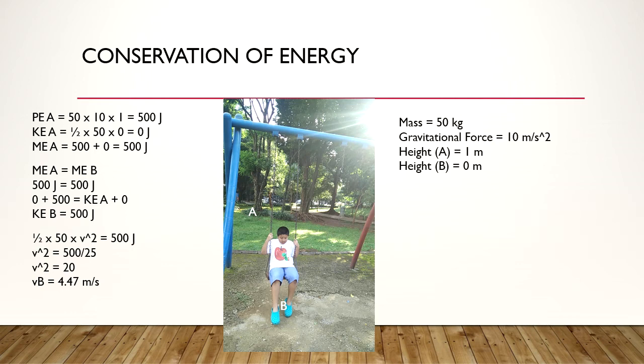The kinetic energy is one half times mass times velocity squared. When the swing is at point A, however, it has no velocity, meaning that the kinetic energy would be 0 joules. The mechanical energy of the swing at point A, which is basically the sum of the potential and kinetic energy, is therefore 500 joules.